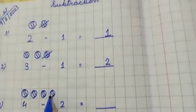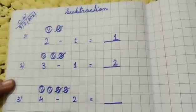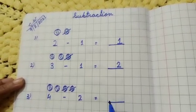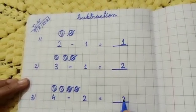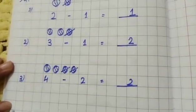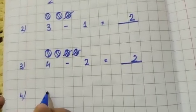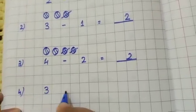Now how many I will cut? I will remove two. I will remove here two, one, two. How many left? One, two. Two left, so here I will write two.